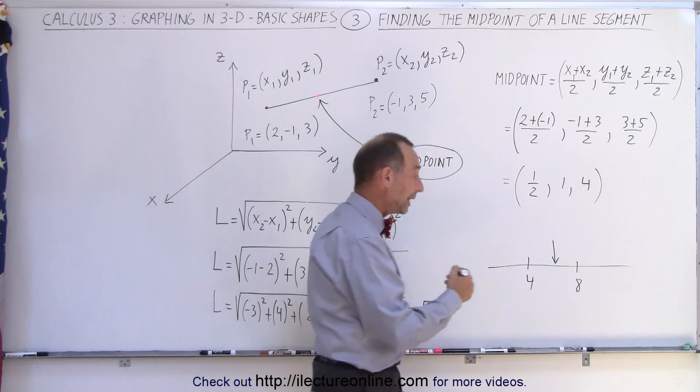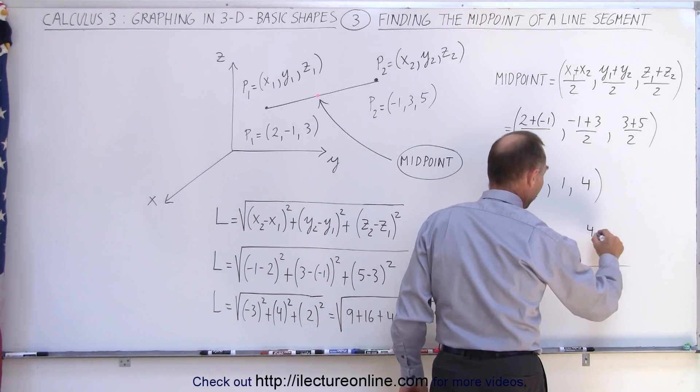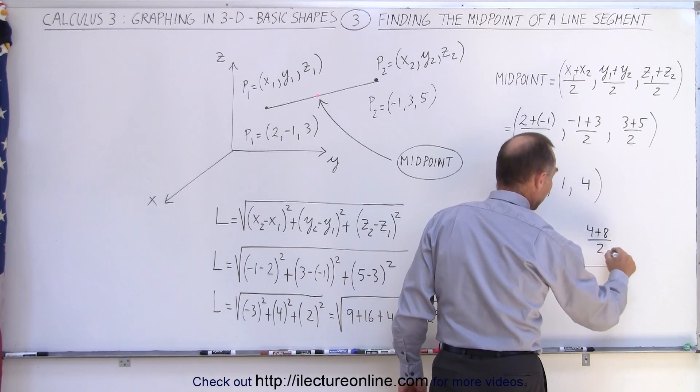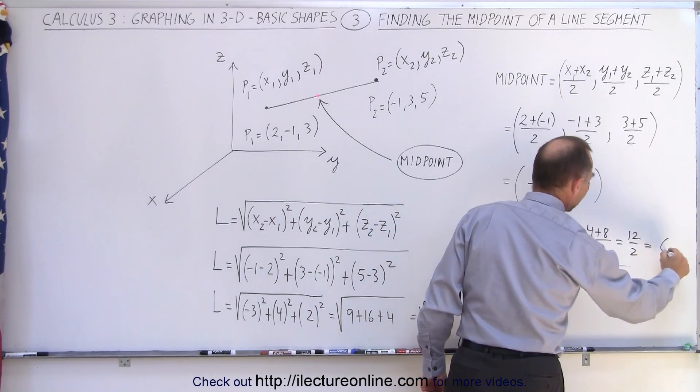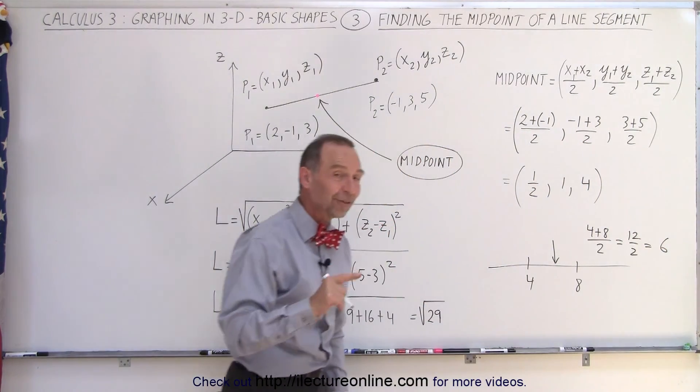You can find that by simply adding the 2 together, 4 plus 8, and then dividing it by 2, which is 12 divided by 2, which gives you 6. So you can see the right answer.